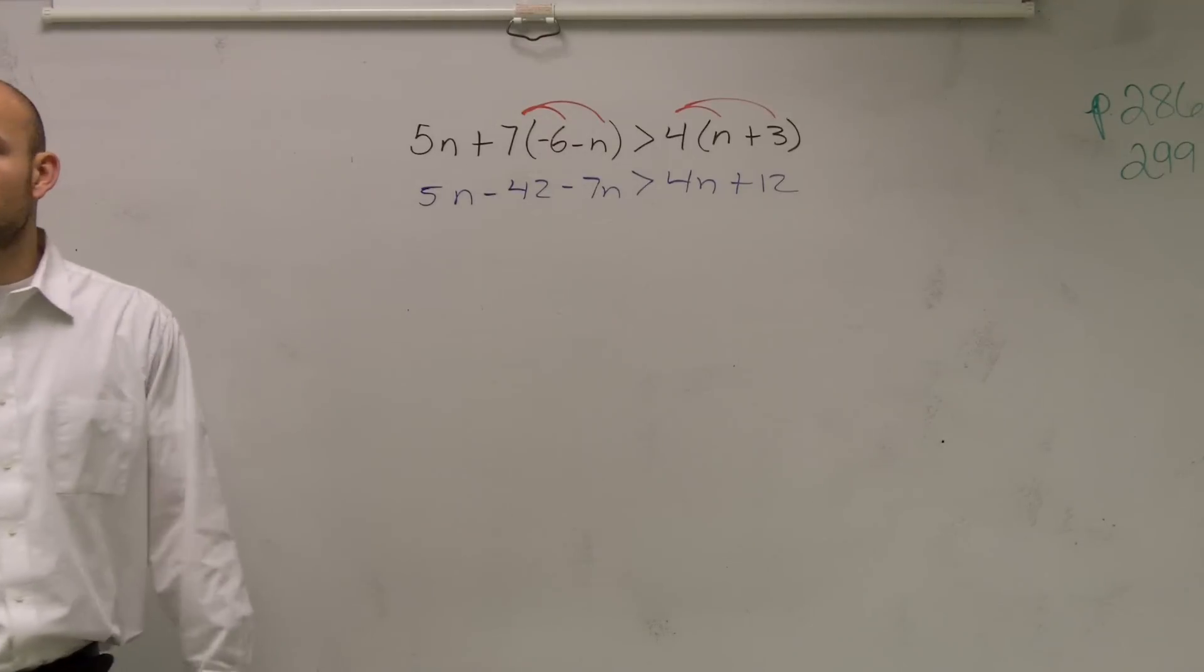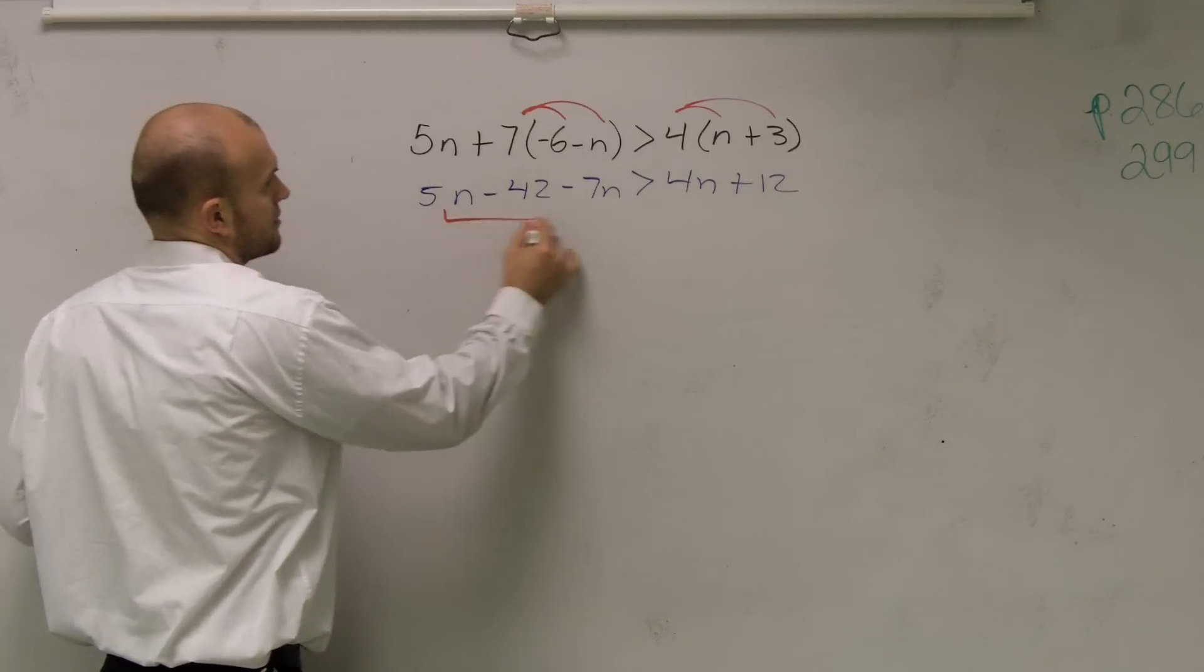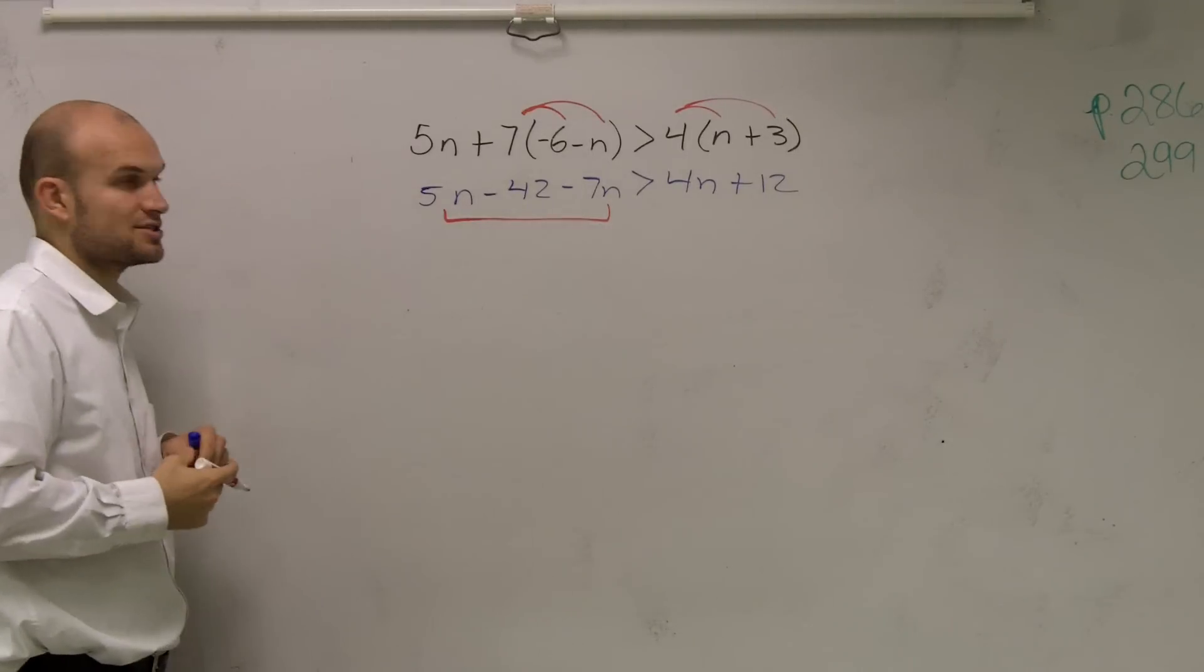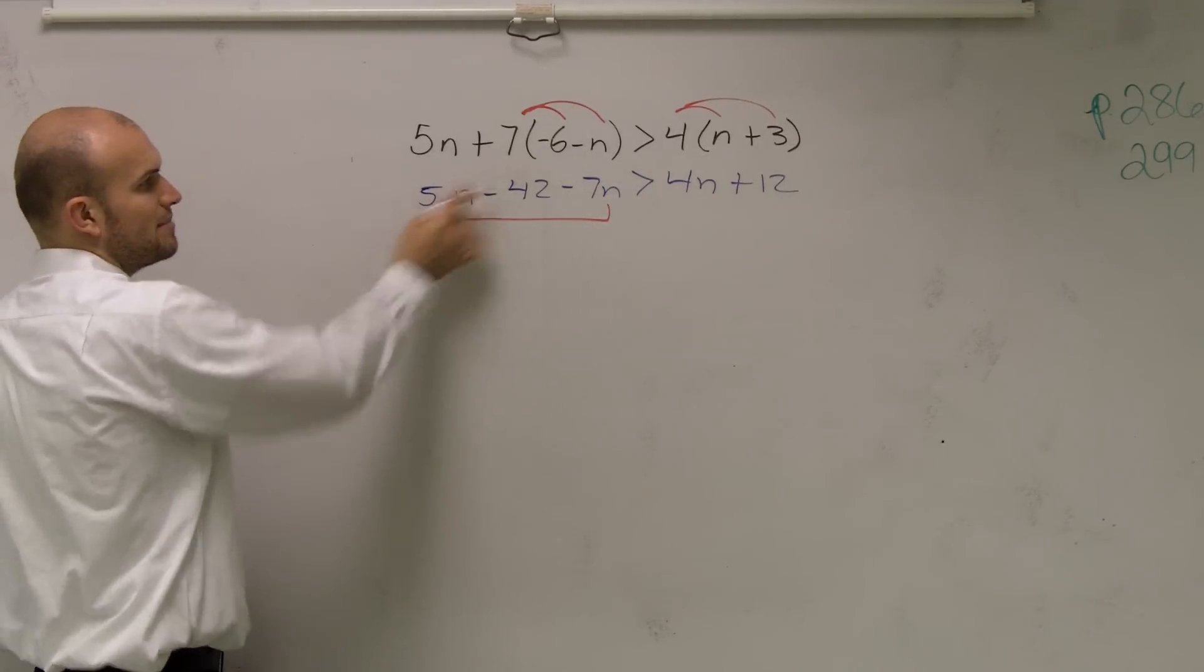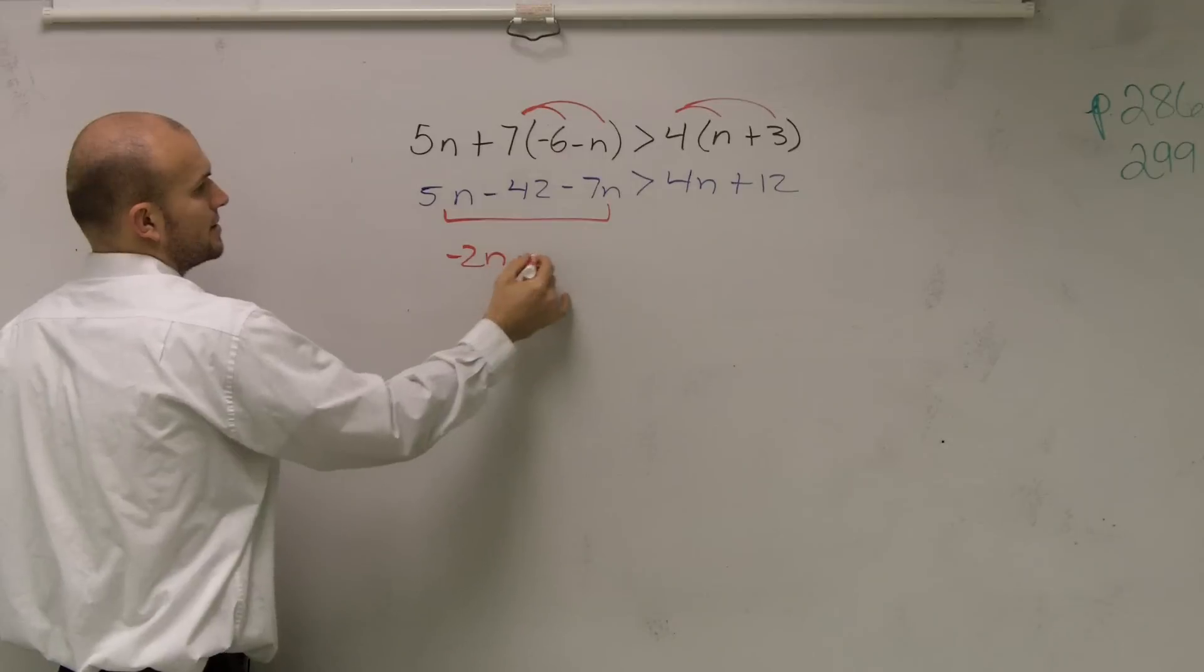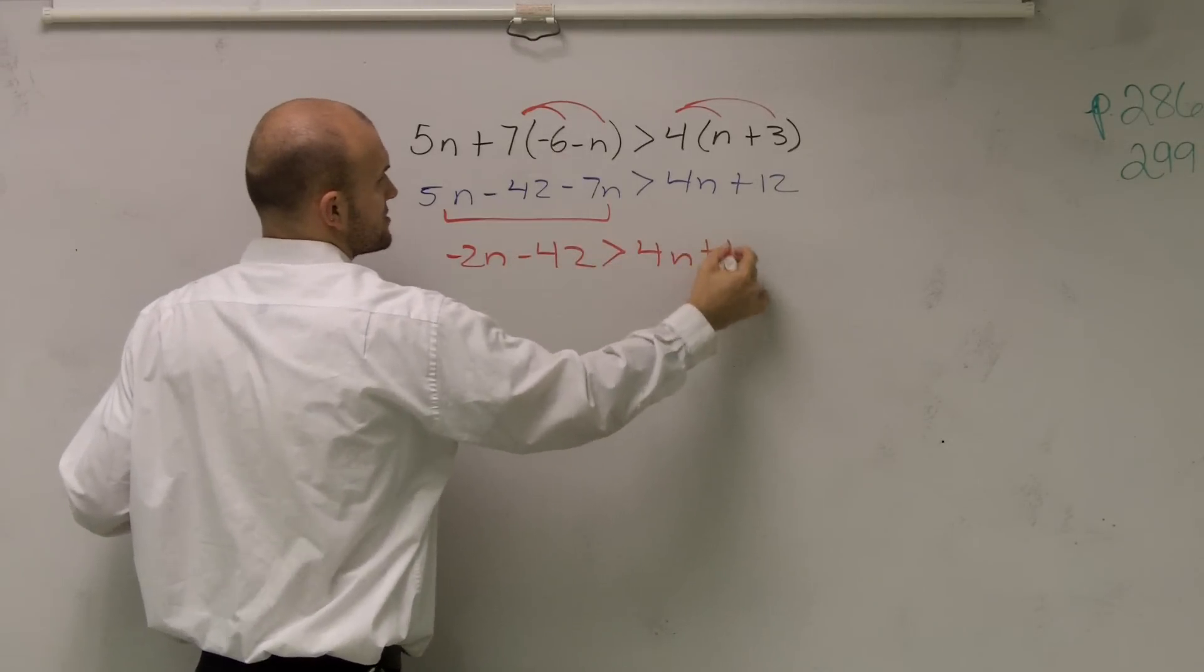Now the next thing they want you to do is combine like terms. Well, those two both share n, so those are like terms. So 5n minus 7n, negative 2n minus 42 is greater than 4n plus 12.